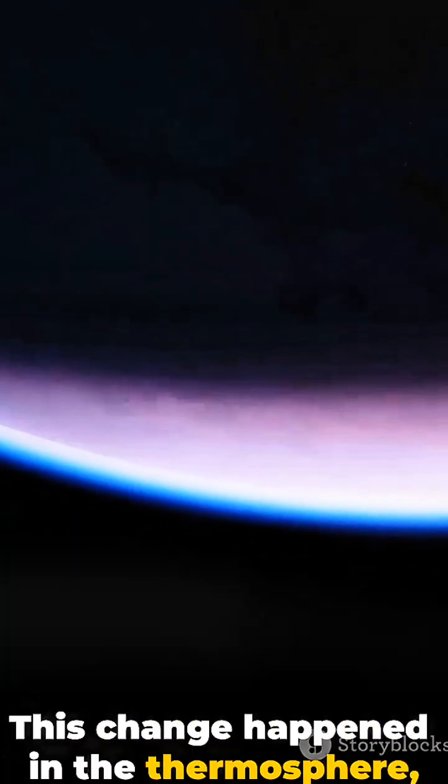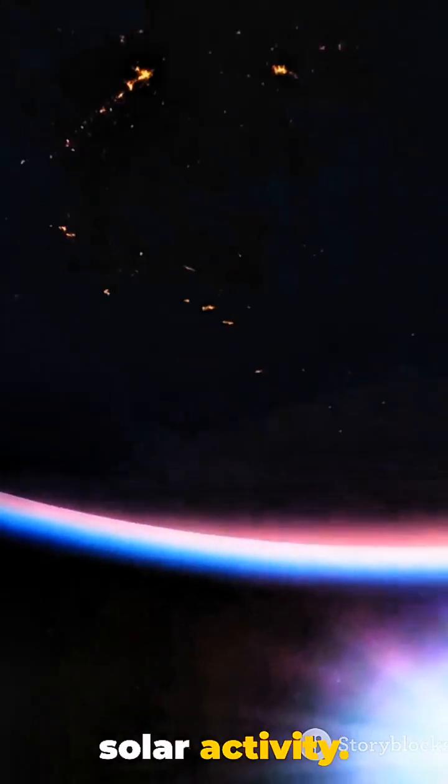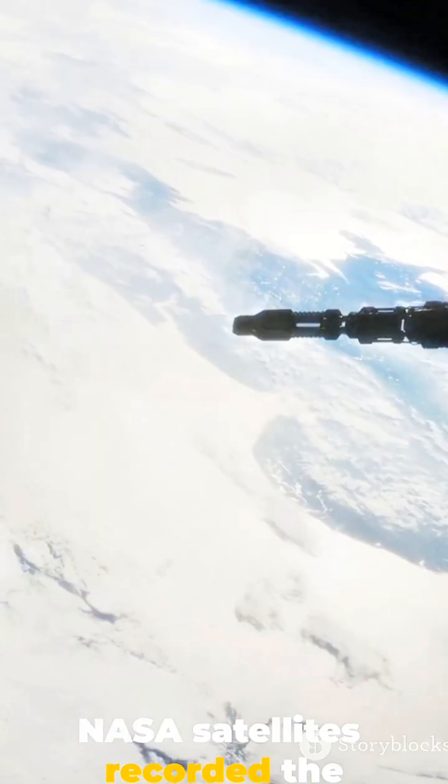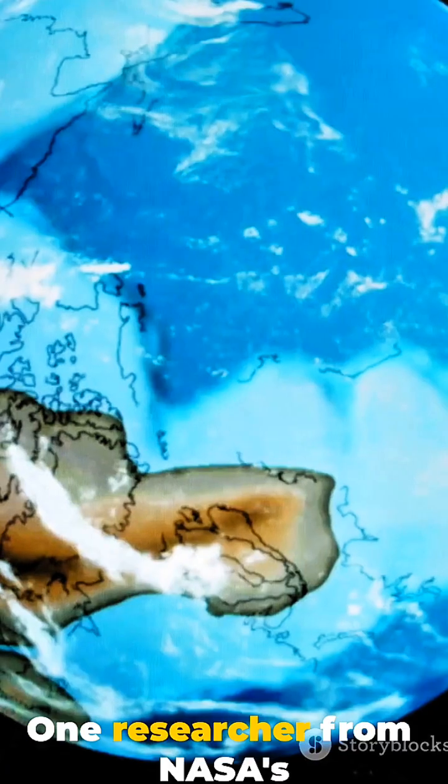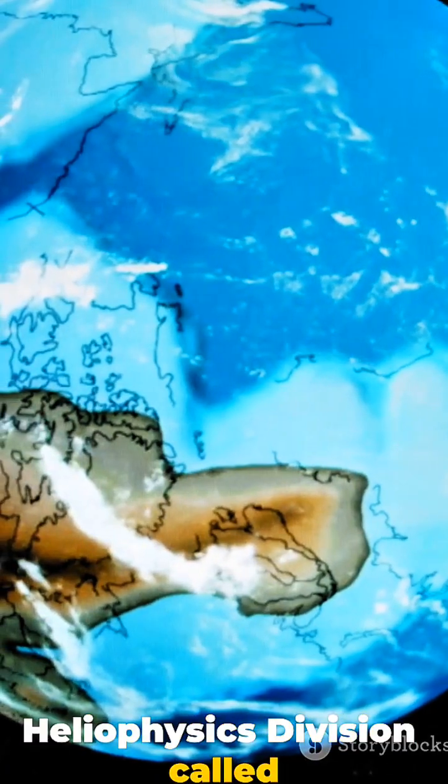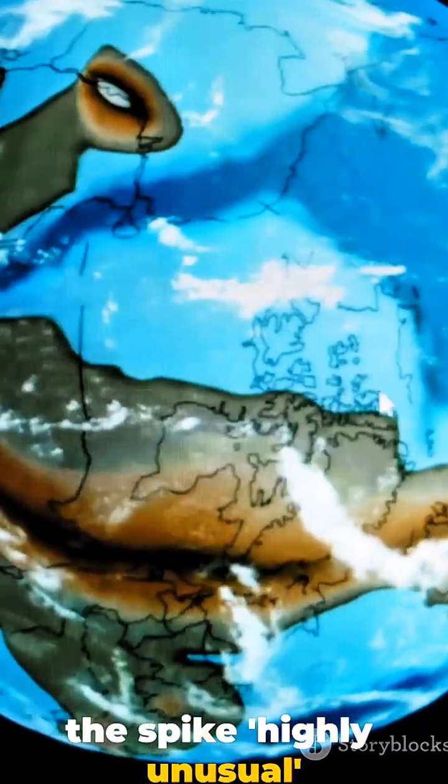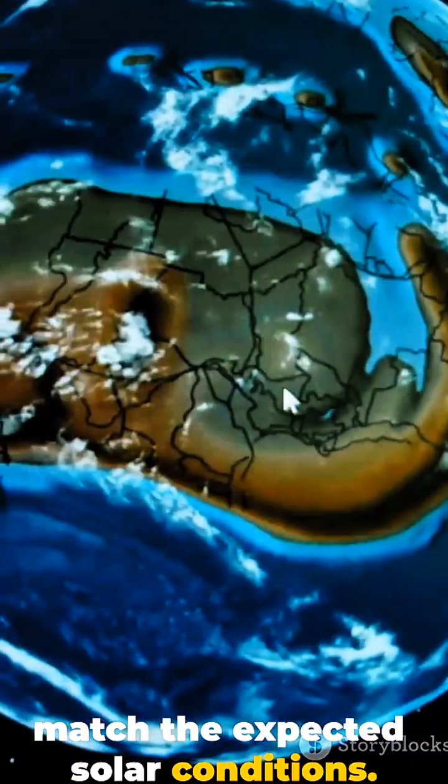This change happened in the thermosphere, the layer that reacts to solar activity. NASA satellites recorded the upper boundary expanding far more than models predicted. One researcher from NASA's Heliophysics Division called the spike highly unusual because the rise does not match the expected solar conditions.